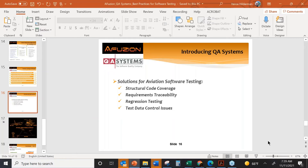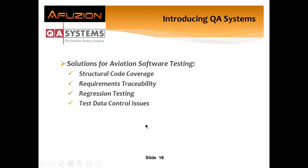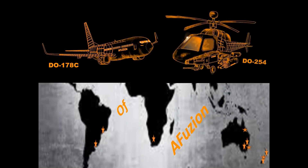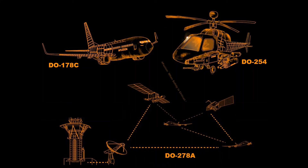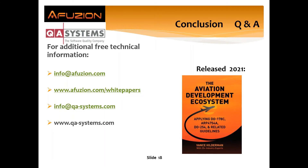That was a terrific presentation showing how to solve real-world challenges with software testing. QA Systems has quite good solutions for code coverage, requirements traceability, regression testing, and test data control issues. Now it's time for the Q&A session. We have about 15–20 minutes and a good number of questions. If you have additional questions, contact eFusion or QA Systems and we'll send you information.